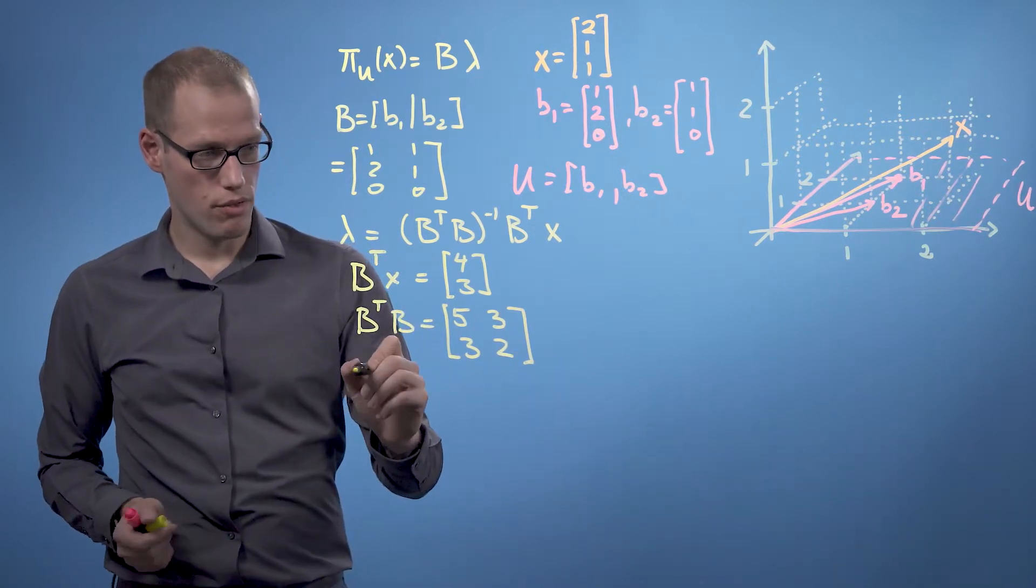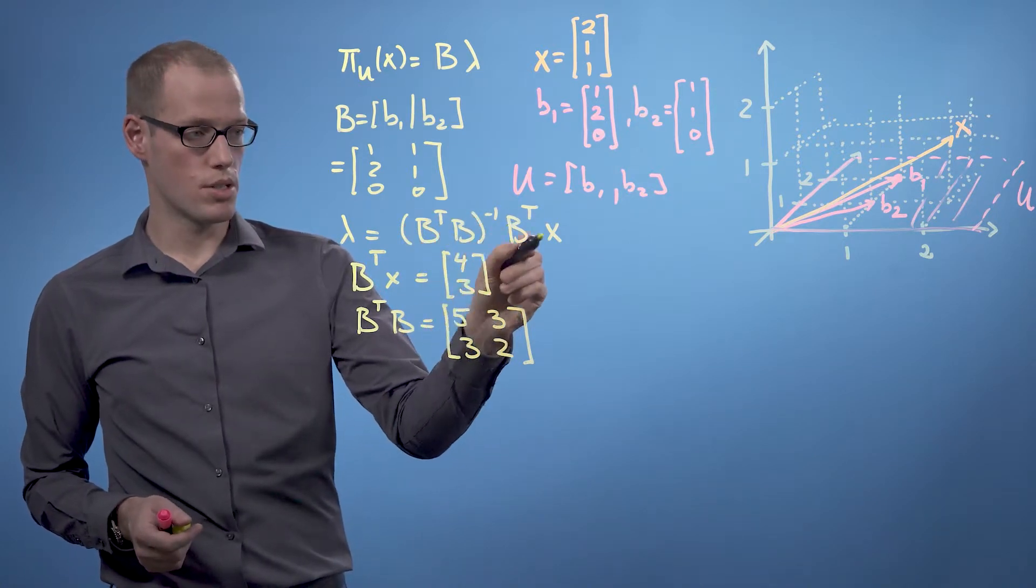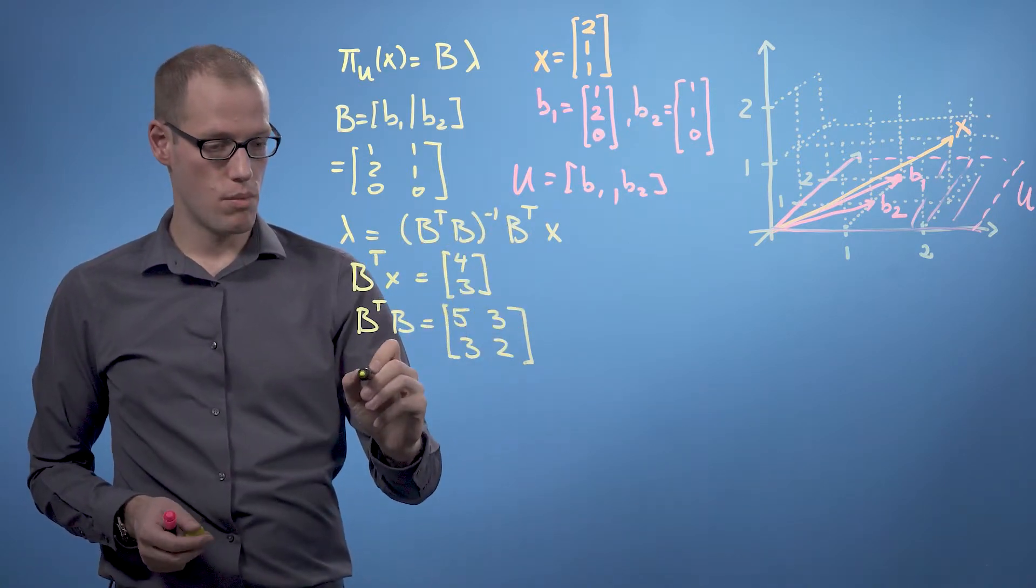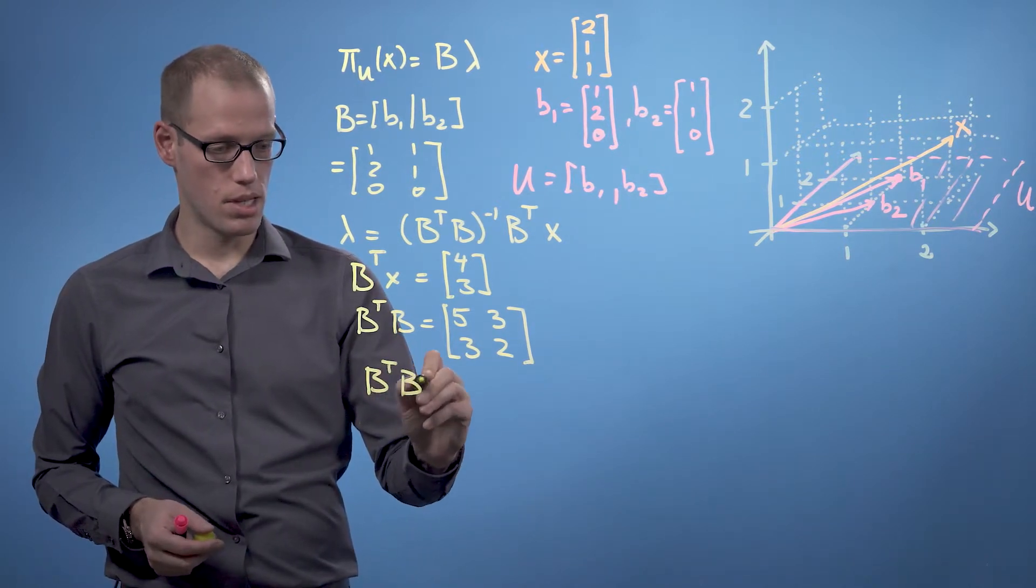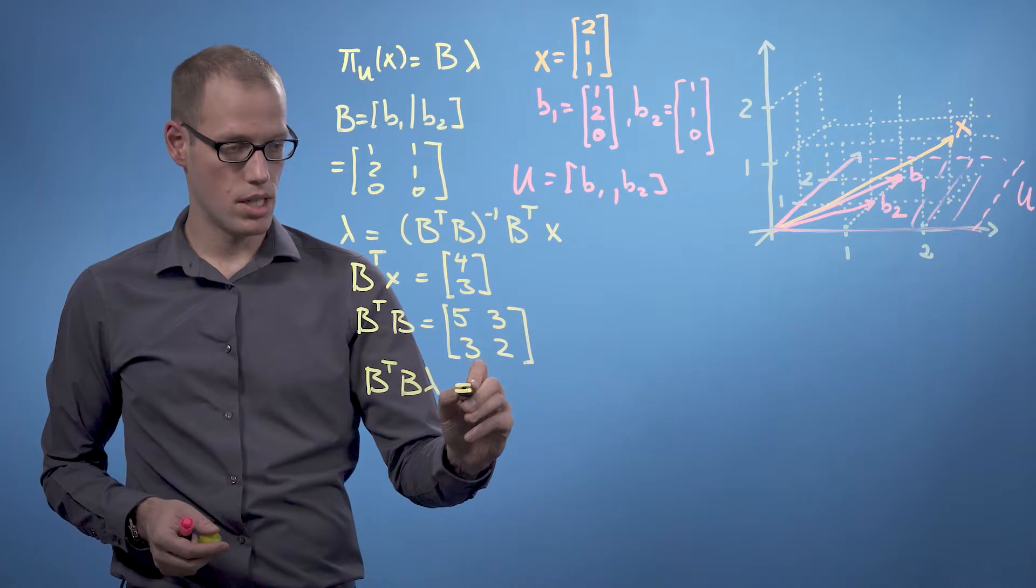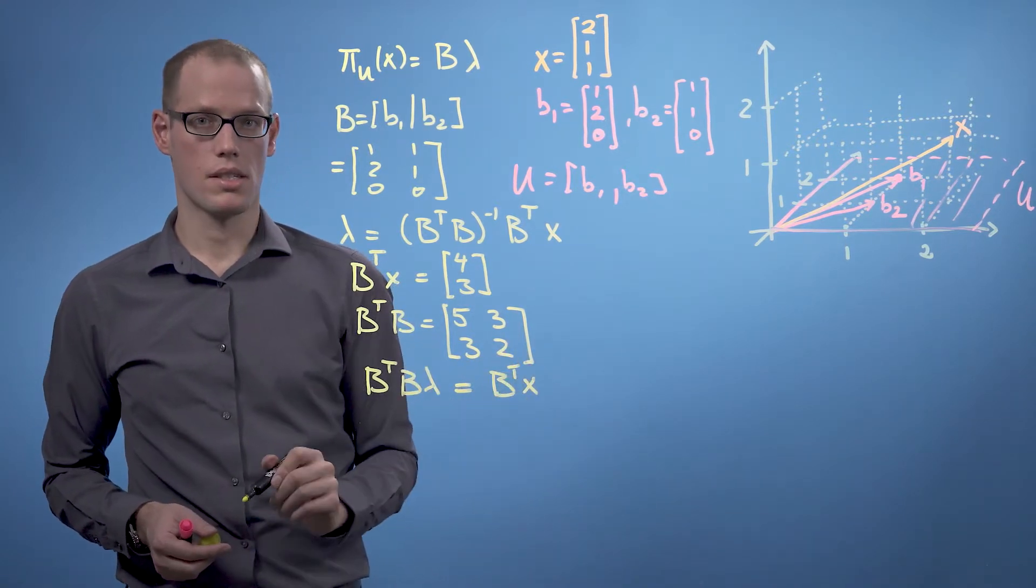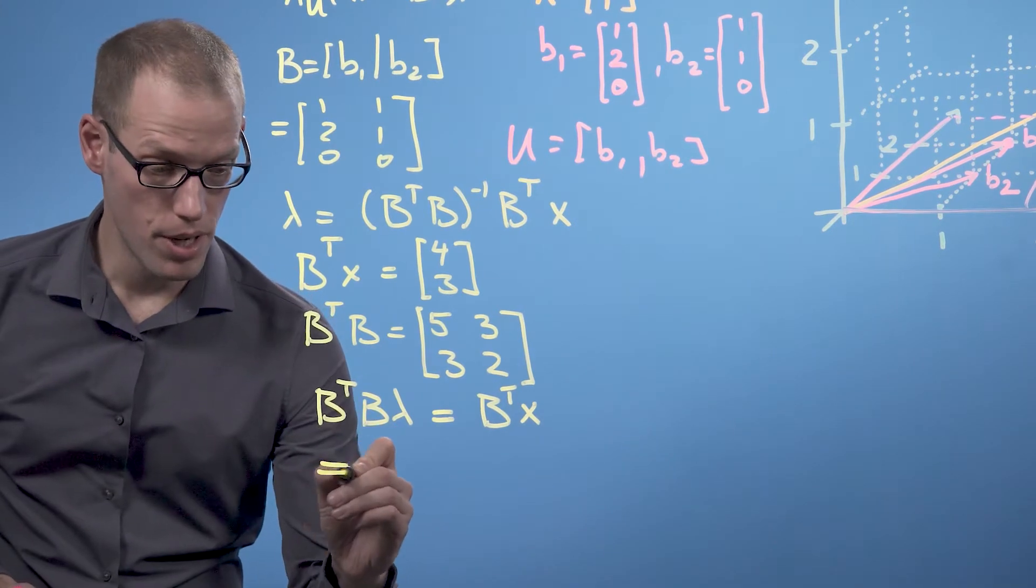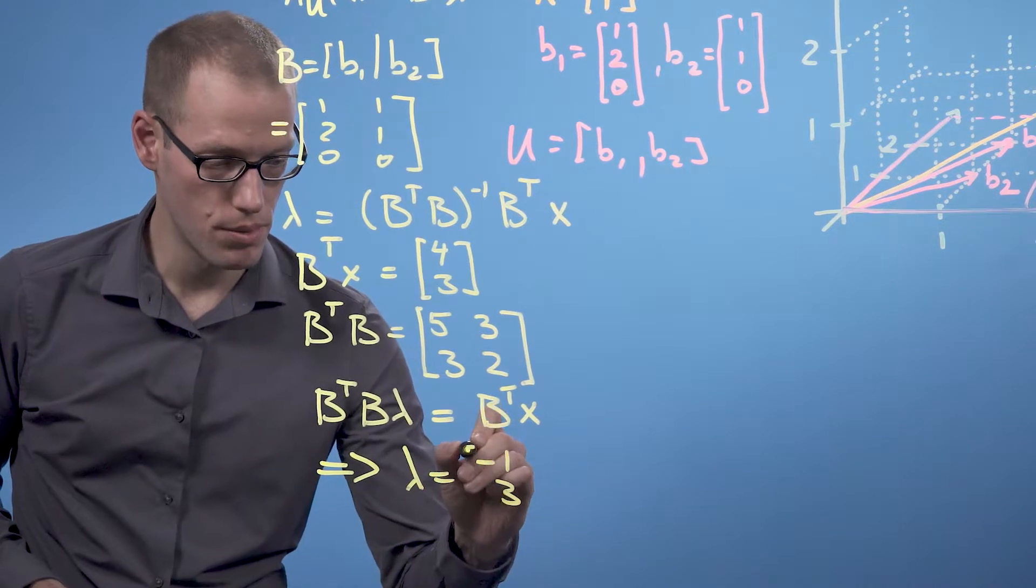Now we solve for lambda as b transpose b inverse times b transpose x, which means we find lambda such that b transpose b lambda equals b transpose x. Using Gaussian elimination we arrive at lambda equals minus 1, 3.